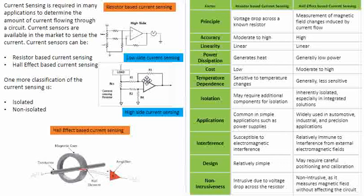In some applications of current sensing, we do need isolation. Isolation helps when there are large currents associated — especially in EV segments and power electronic applications. The point where we sense and where we get the analog voltage need to be isolated so that any effects on these high-speed paths do not impact our low-level digital electronics. Sensors can therefore be classified into isolated and non-isolated.